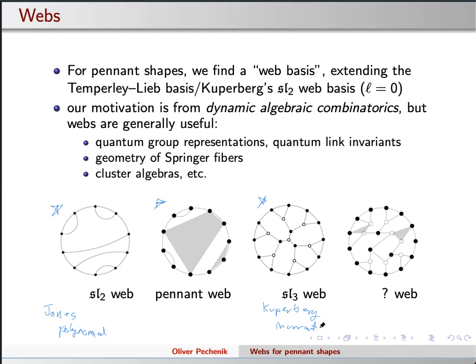I'm telling you I have these things that are basically webs, and so you should try to do analogous things in these other places. Webs are also doing nice things on the geometry of Springer fibers — Springer fibers are associated to some Jordan type and they're hard to understand generally, but in these special Jordan types where you have corresponding webs, you can make things very explicit and understand how the various irreducible components interact with each other. There are also really nice cluster algebra stories associated to all these webs. So you should care about webs.